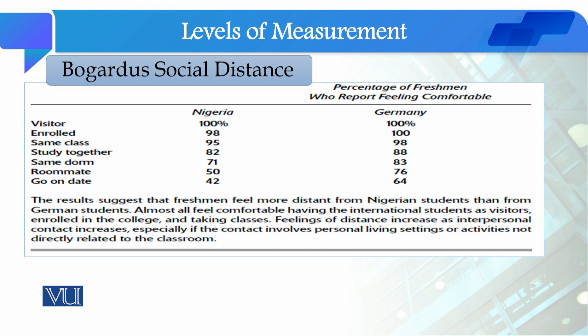The results show that as a visitor to the Nigerian community, willingness is high — close to 100%. However, when it comes to sharing the same dormitory, comparatively Nigerian students receive less willingness than German students. This means European students show more social distance toward Nigerian students than toward German students. Looking at the roommate frequency, local European students were more willing to share a room with German students than with Nigerian students. So we can use the Bogardas Social Distance Scale to measure social distance between different ethnic groups.